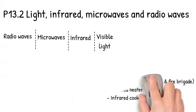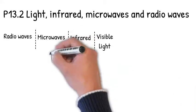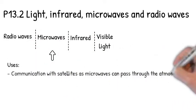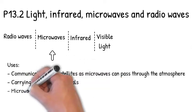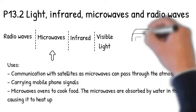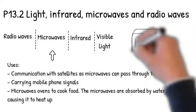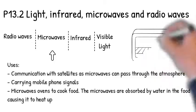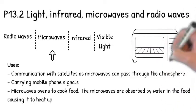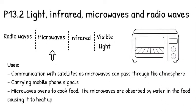And now for microwaves. Microwaves are used to communicate with satellites, as microwaves can pass through the atmosphere, whereas radio waves are absorbed by the atmosphere. They are used to carry mobile phone signals, and they are also used to cook food. This is because the microwaves are absorbed by the water in the food, which causes it to heat up.